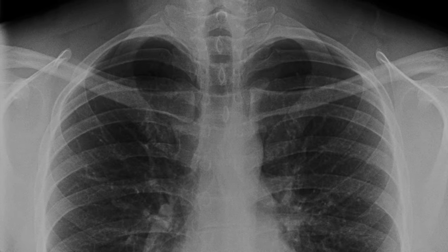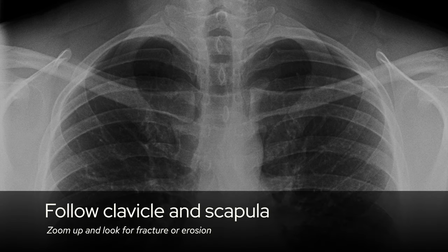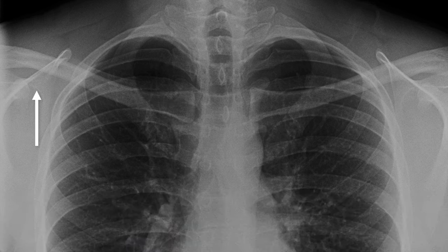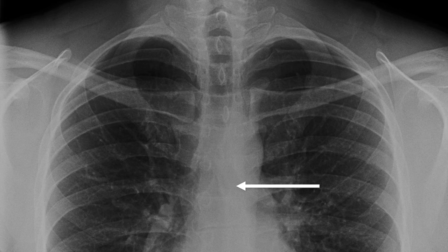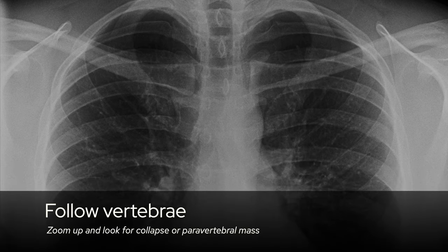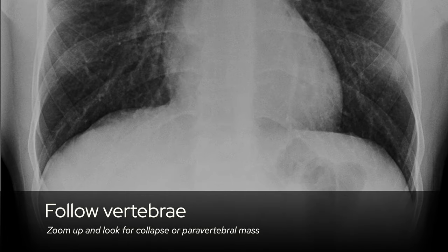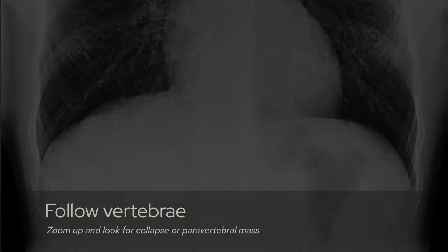Once I've done the ribs, I then look at the clavicle — starting at the medial clavicle and going out to the distal clavicle — then the scapula, doing each side in turn. Lastly with the bones are the vertebrae: looking behind the mediastinum, I scroll all the way down carefully looking at each vertebra for any collapse and for any paravertebral mass or lesion.